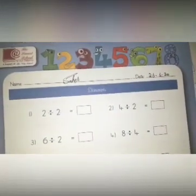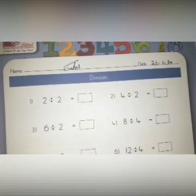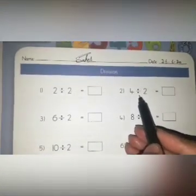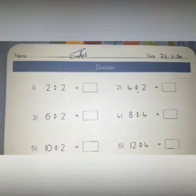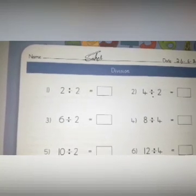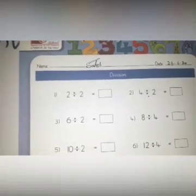Now you have a new chapter: division. What is division? Division means sharing equally, and this symbol is used for division. You can also say that division is repeated subtraction. Now you have question number 1: 2 divided by 2.